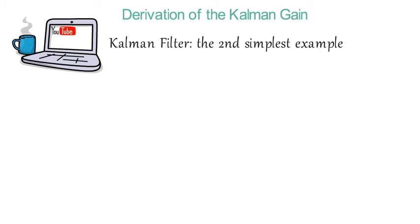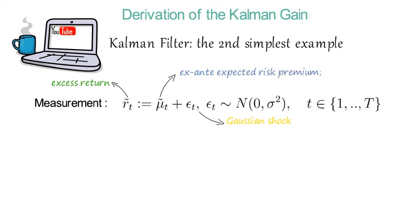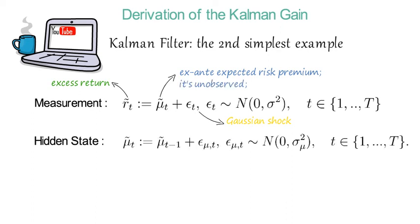At each point in time t we have a measurement of r_tilde_t, which are the excess returns. We assume that they consist of two parts: mu_tilde_t and epsilon_t. Epsilon_t is a Gaussian shock with mean zero and variance sigma squared — that's the measurement error. Mu_tilde_t is the ex-ante expected risk premium, and we assume that it's unobserved and that it follows the following state equation where mu_tilde_t equals mu_tilde_{t-1} plus epsilon_mu_t.